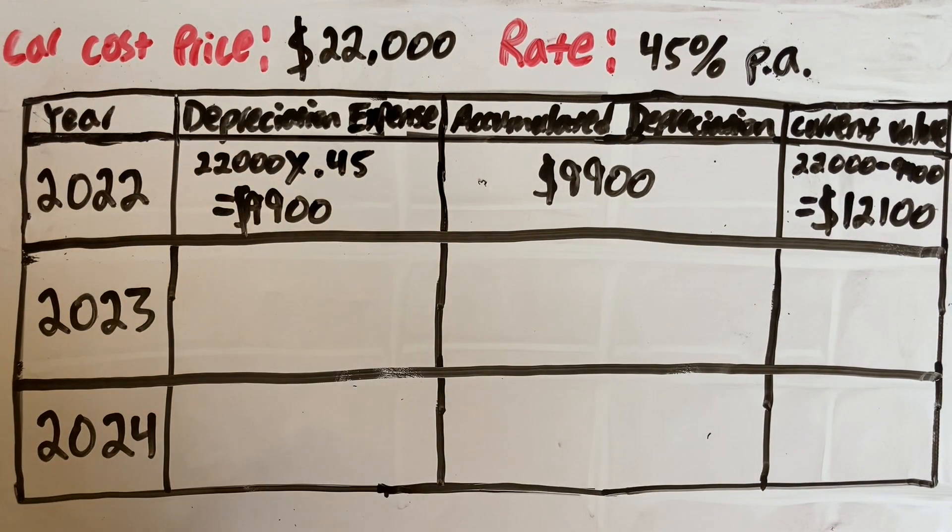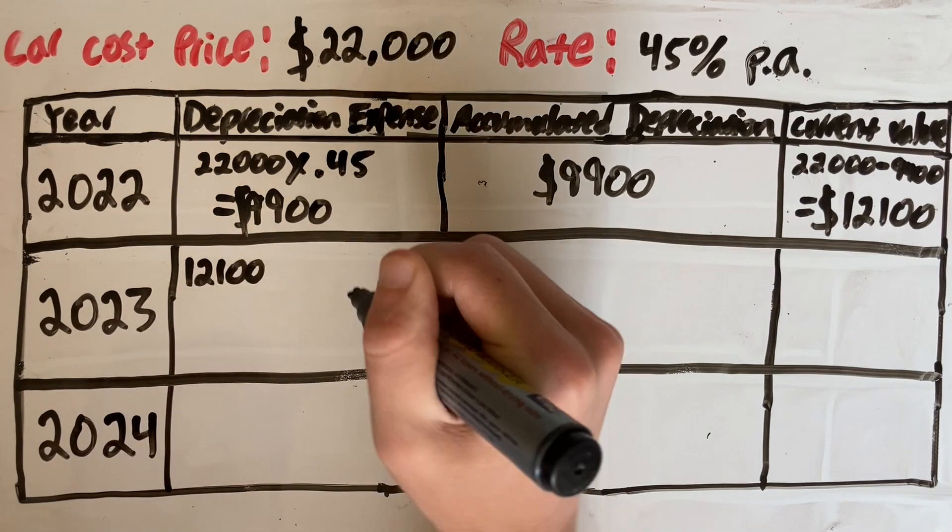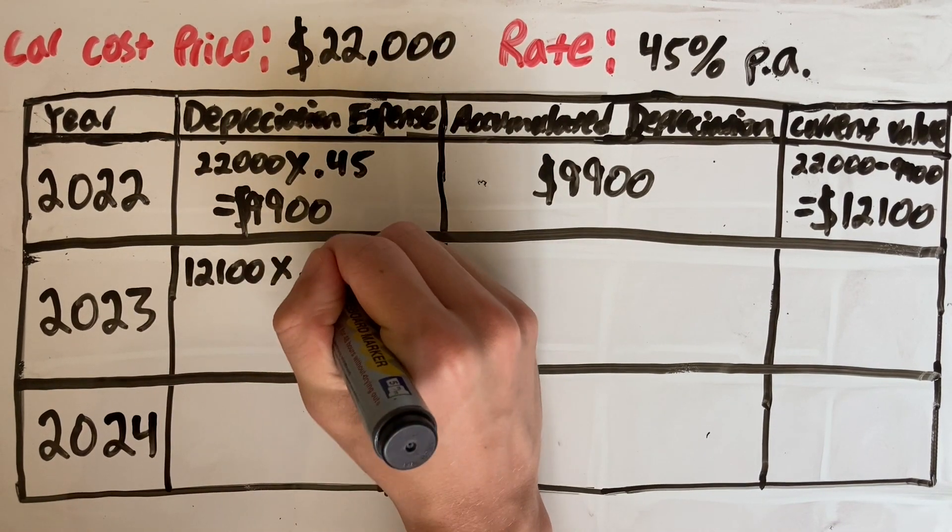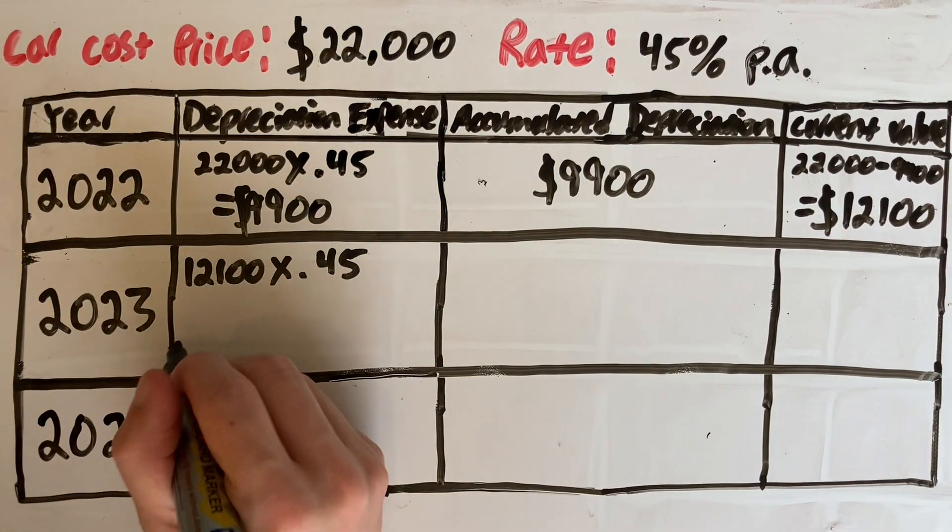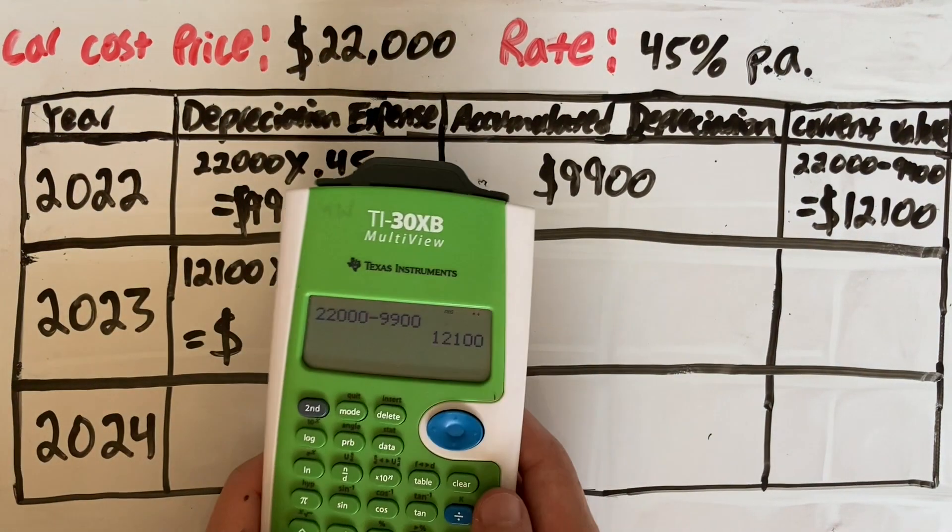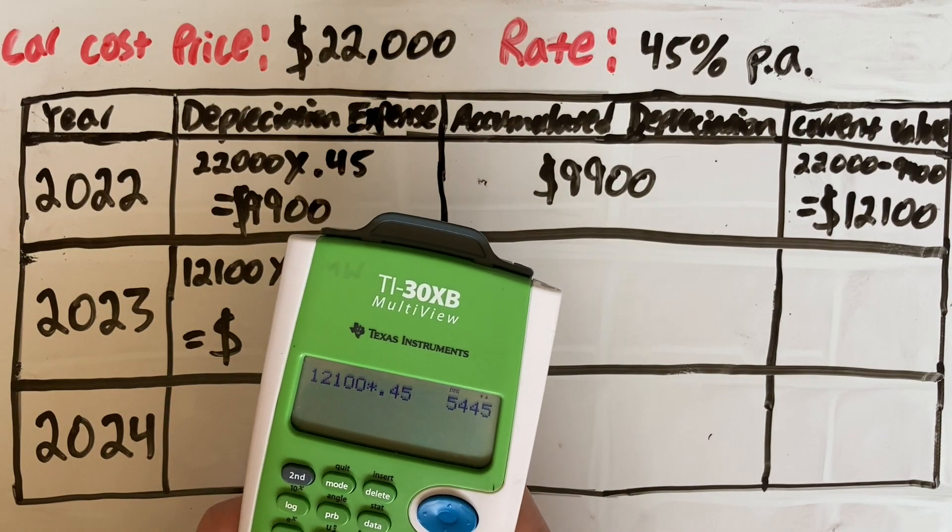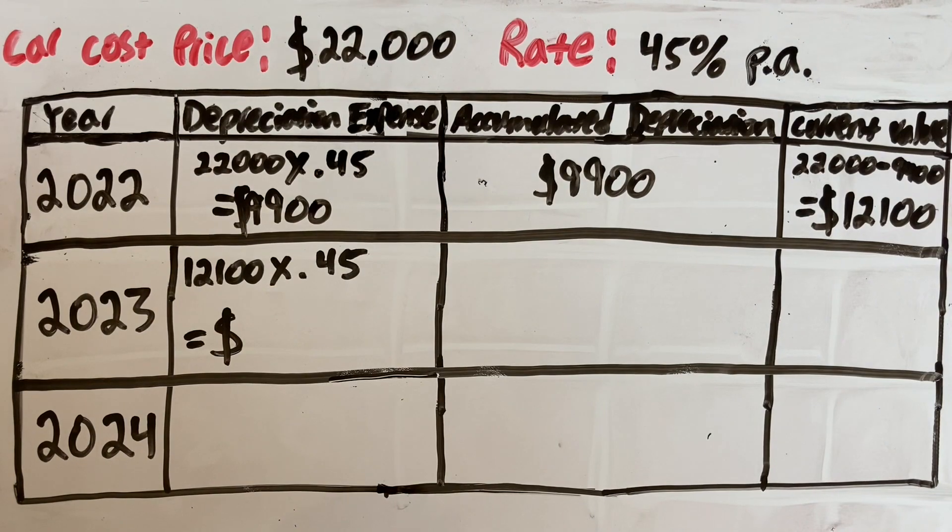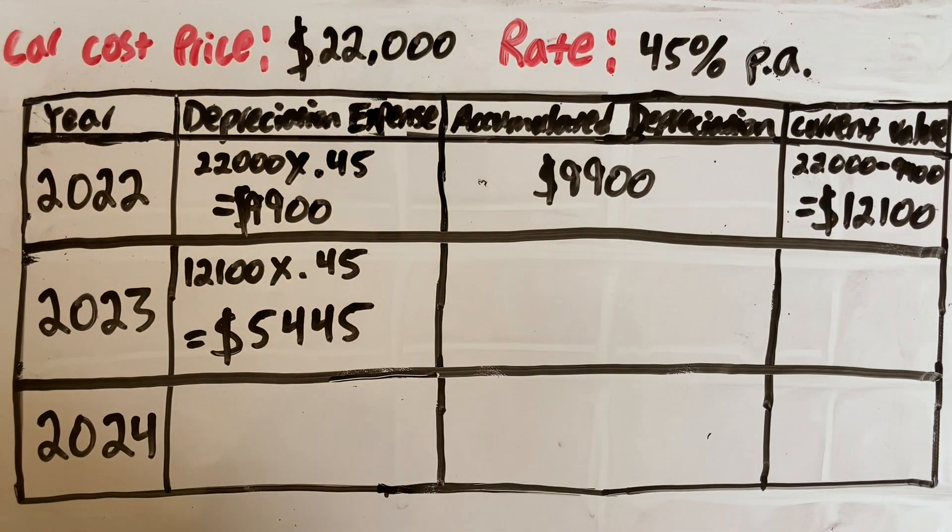We move on to our next year and repeat that same process, 2023. The difference is instead of using our original value, you always use the current value. So we take $12,100 this time and multiply it by our rate. So $12,100 times our rate of 0.45. That gives us our depreciation expense for this year to be $5,445. As you can see, it's smaller than the first year. And that's how this reducing balance method works.